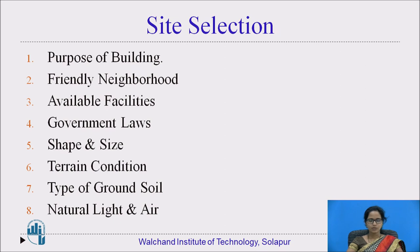The site should be free from adverse circumstances such as noise pollution and air pollution. In short, the site should be selected away from the industrial area. It should also be away from rivers carrying flood water, so that we can avoid water logging which may cause settlement. For friendly neighborhood, the neighborhood should have a friendly environment that matches our status so that living conditions are improved.